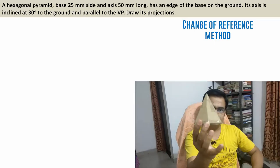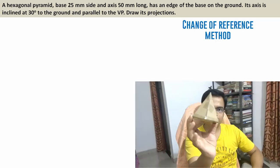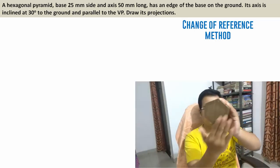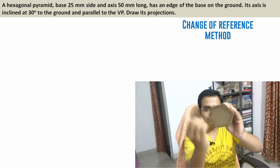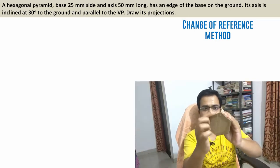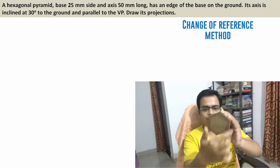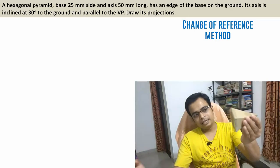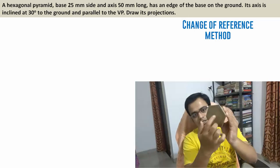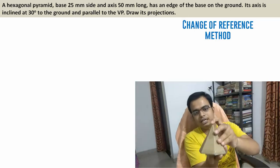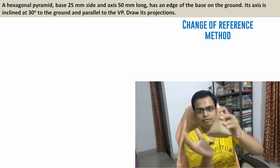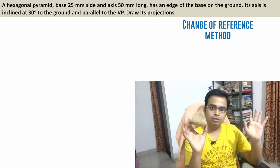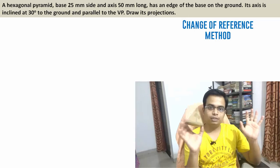This is a hexagonal pyramid. Its base is in the form of a hexagon having six sides, all of them 25 mm each. Then there is the axis from the center till the apex, and this length has been given as 50 millimeters. So that was all about the dimensions of this object.